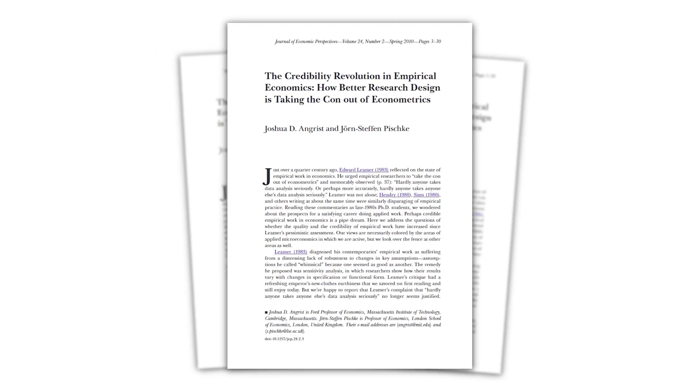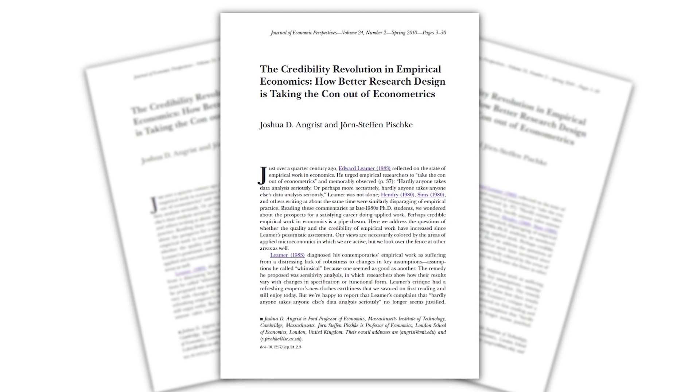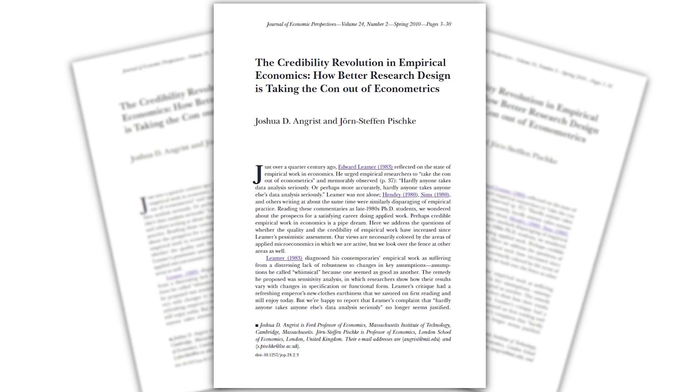Finally, the credibility revolution — as it was called by adherents of the Card-Krueger way of doing things — has matured. Nowadays, there's much more rigorous scrutiny applied to determine if an identification strategy is plausible or credible. It's more than just finding exogenous variation — it's convincing skeptics.